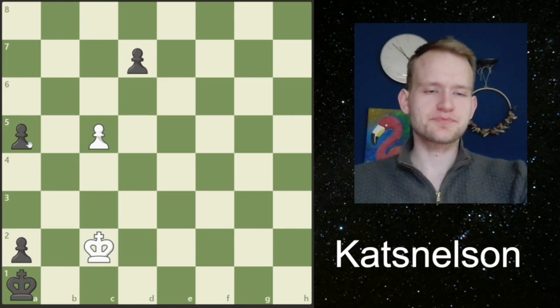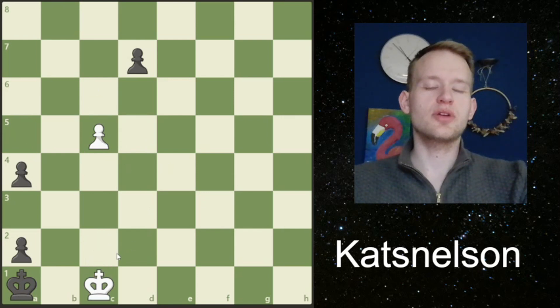In this position, black will probably play a4. It's the only move, because if you advance the d-pawn, we're just going to take it. So black plays a4. White can't move his pawn, so he needs to play king to c1, keeping the black king trapped like this. Here, black is in zugzwang.